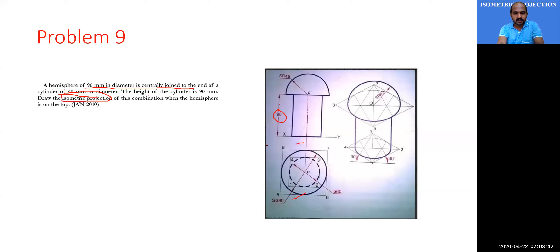We are now moving to the isometric projection. Remember, this is an isometric projection, so the isometric scale is important — you need to draw it. All dimensions in this isometric projection use the isometric scale. We initially start by drawing the isometric projection of the cylinder.